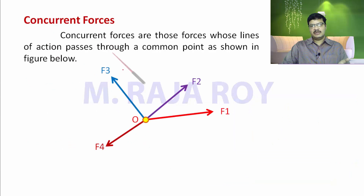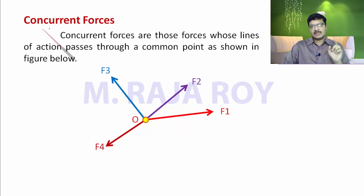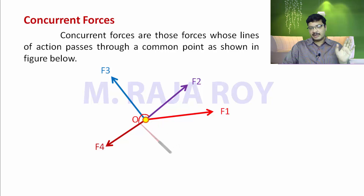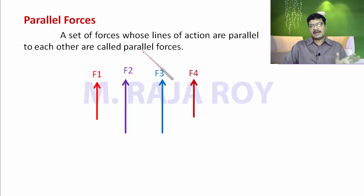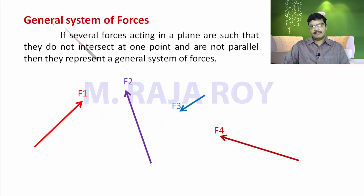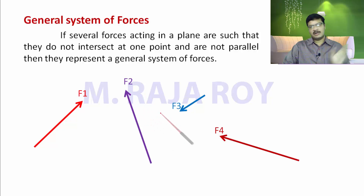Concurrent forces: when the lines of action of several forces pass through a common point, those forces are called concurrent forces. Here, four forces F1, F2, F3, F4 all have lines of action passing through common point O — so they are concurrent forces. Parallel forces: when lines of action are parallel, even if their magnitudes are different, they are called parallel forces. General system of forces: these do not belong to either concurrent or parallel forces — their lines of action do not meet at a common point and are not parallel to each other.